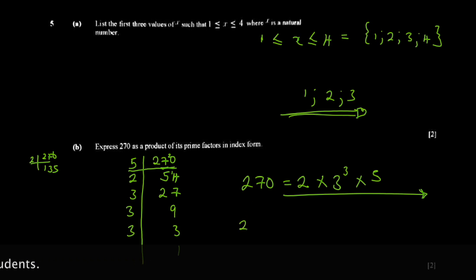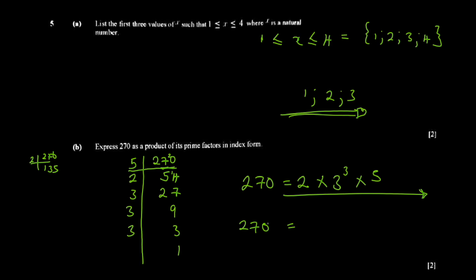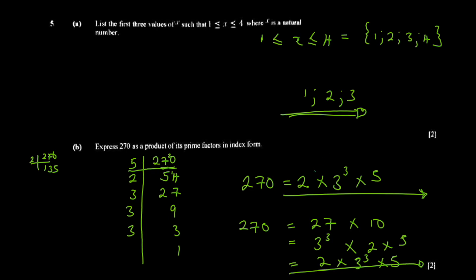Writing this in index form — which uses powers — list the smallest prime first: 2 to the power 1, times 3 to the power 3, times 5. An alternative method: notice that 270 = 27 times 10. You know 27 is 3 cubed, and 10 = 2 times 5. So you get the same answer: 2 times 3 cubed times 5. Any number to the power one is itself, so you can leave it without the exponent. That's it — like, share, and subscribe!